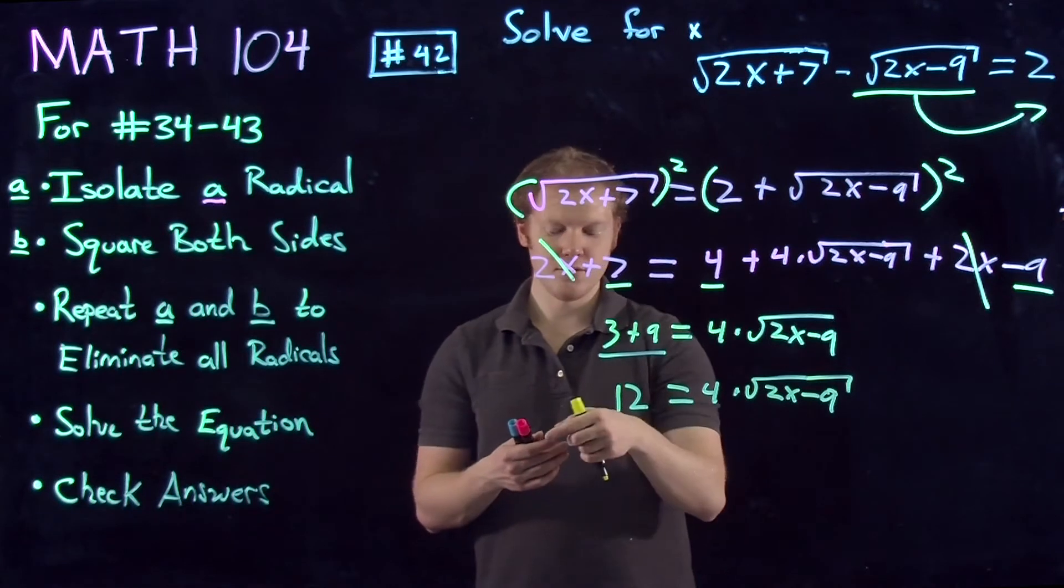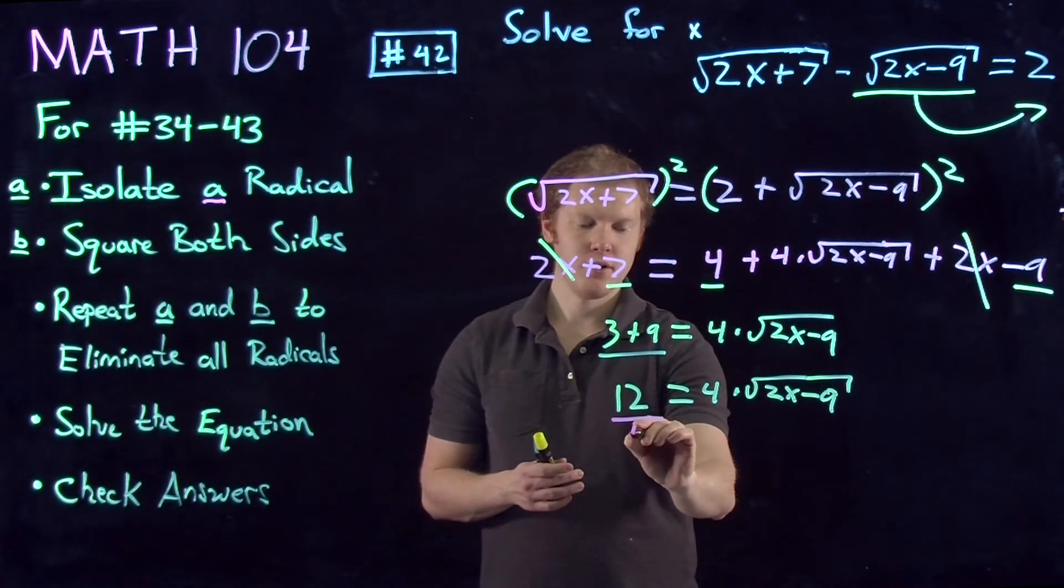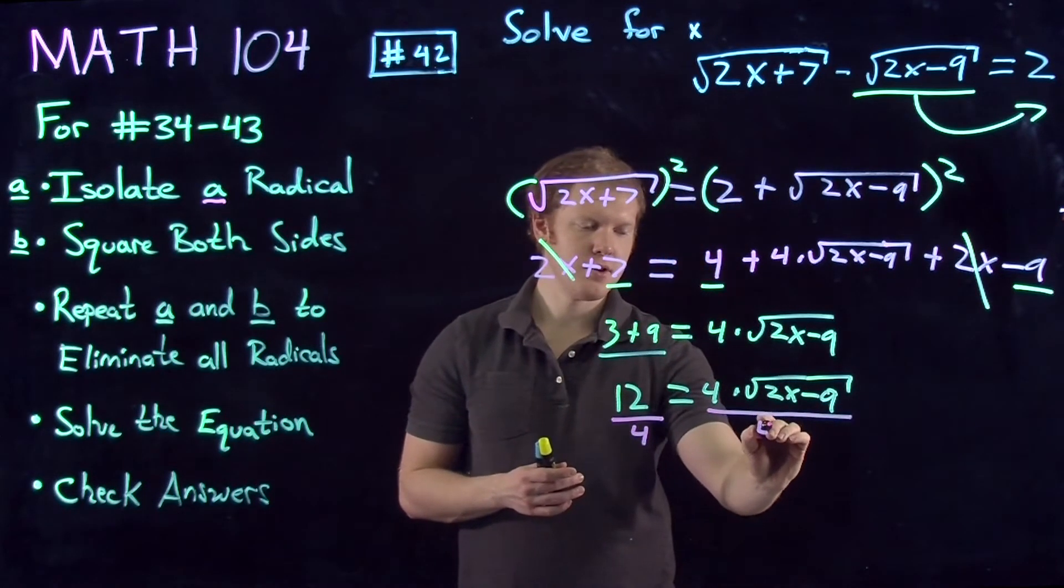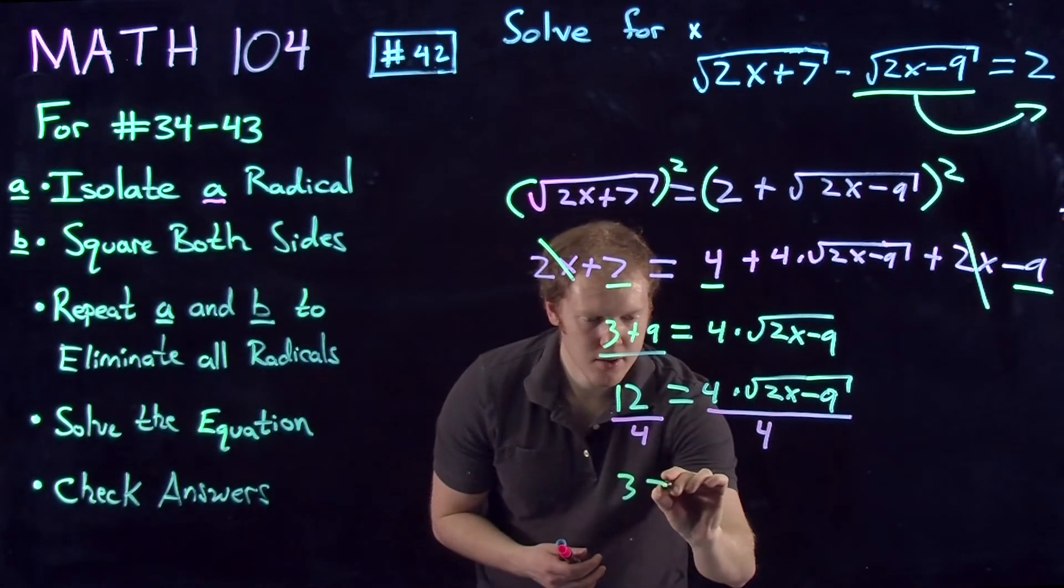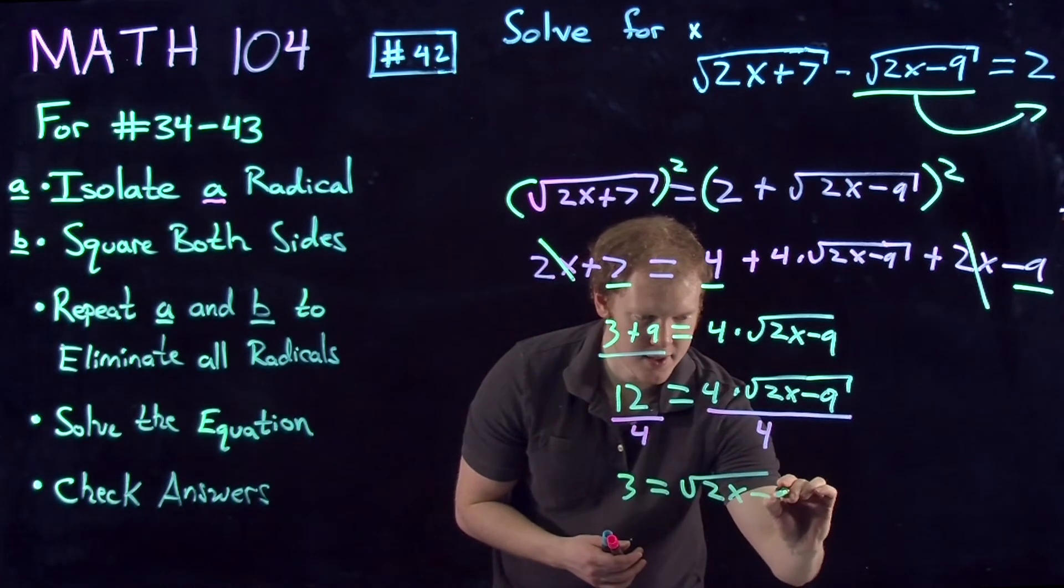If we notice, these two terms have a common factor of 4. So we can divide both of these quantities by 4, which gives us 3 equals the square root of 2x minus 9.